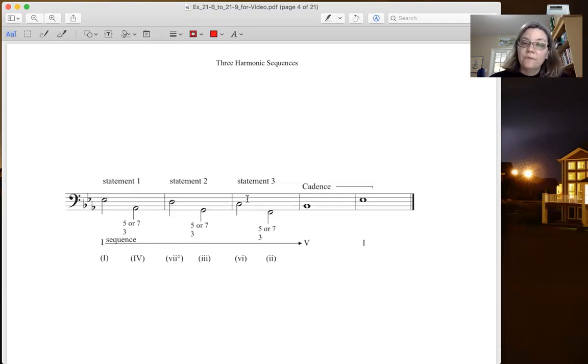In statement three, we end up on 6, the submediant. Then that moves down a fifth and we end up on the two chord or the supertonic triad. Then that moves up a fourth and we finally get to the dominant. From the dominant, we can then move into our perfect authentic cadence. But our actual sequence is these first three measures here.